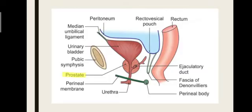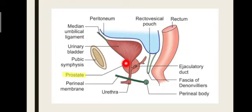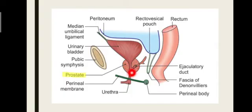This is a mid-sagittal section of the male pelvis. This is your urinary bladder. In front of the urinary bladder you have your pubic symphysis, and behind the urinary bladder is your rectovesical pouch and your rectum. The neck of the urinary bladder continues downwards as your urethra, and this is the point where your prostate gland is located. So for the location of the prostate gland, it is located just below the neck of the urinary bladder.